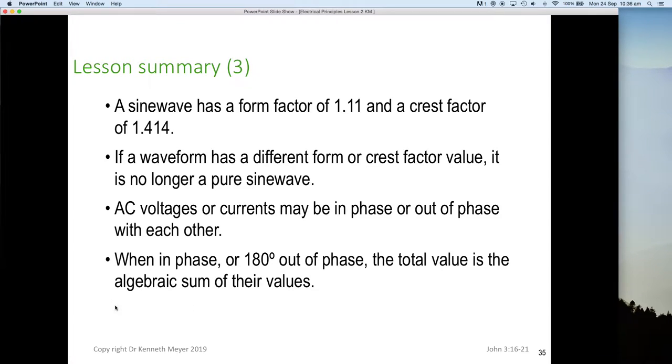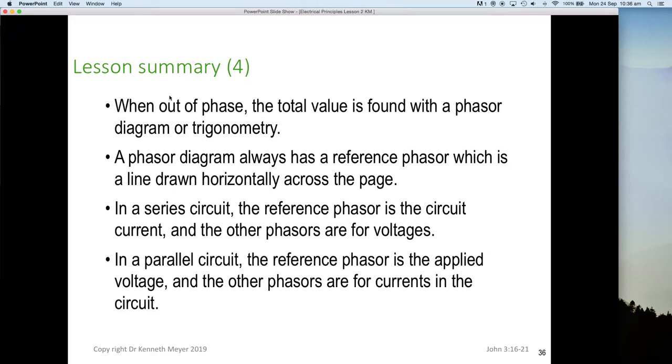AC voltages or currents may be in phase or out of phase with each other. When they are in phase or out of phase with each other, the total value is the algebraic sum of their values. So if they are in phase or out of phase by 180 degrees, we can actually use algebra directly. When out of phase, the total value is found with a phasor diagram and some trigonometry, as we've just discovered.